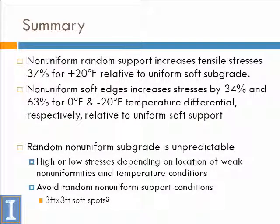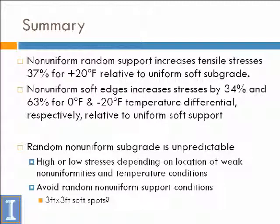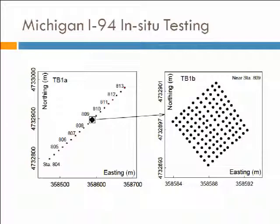Random non-uniformities cause concern because we can't predict whether they're going to be critical or not — they may produce high or low stresses. We chose three-by-three because we thought that's about what you'd be able to detect with an intelligent compaction device — maybe still too small — but it at least shows some resolution in terms of stress increases. The next step was to have Professor White's crew go out to the field at about seven different locations in the U.S.